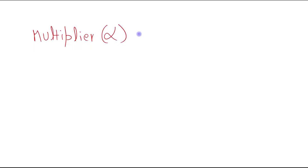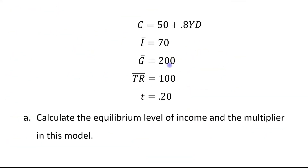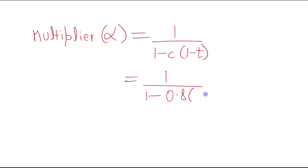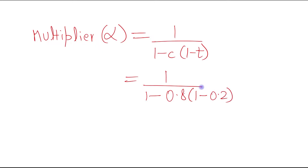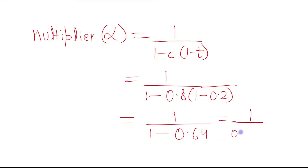The multiplier, denoted by alpha, equals 1 divided by (1 minus c times (1 minus t)). Here the MPC out of disposable income c is 0.8 and the tax rate t is 0.2. So it's 1 divided by (1 minus 0.8 times 0.8), which is 1 divided by (1 minus 0.64), giving 1 over 0.36, and its value is 2.78.